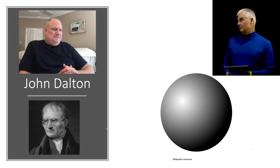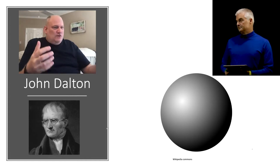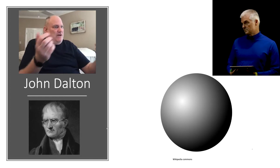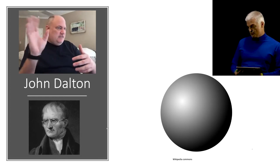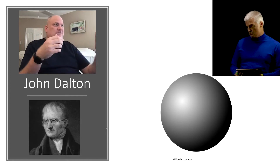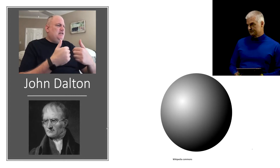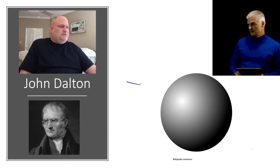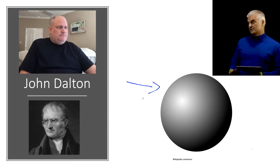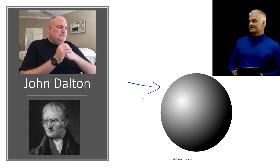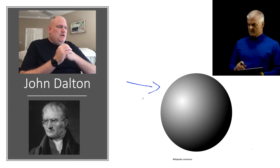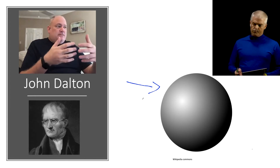John Dalton was the first scientist we're going to look at. The fact that he thought there were atoms is kind of a big deal, because the Greeks said there were atoms 2,000 years ago and then nobody touched it — nobody could see them. Then Dalton came along and said yes, there are atoms, and he thought they looked like billiard balls. This is around the 1700s.